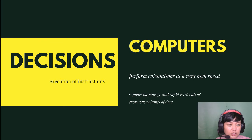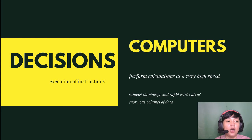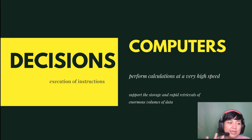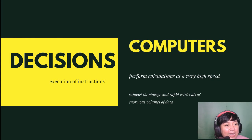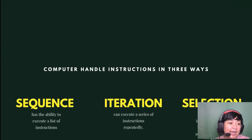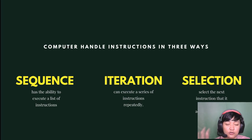Computers can perform calculations at a very high speed and have the ability to support the storage and rapid retrieval of enormous volumes of data. A computer is able to make decisions during the execution of instructions and can handle instructions in three different ways. Computers calculate faster than humans, quickly retrieve information, and are able to make fast decisions.